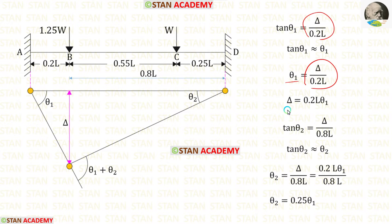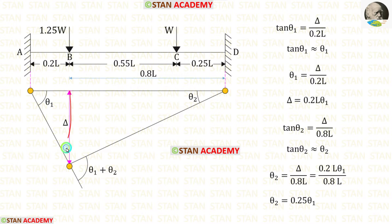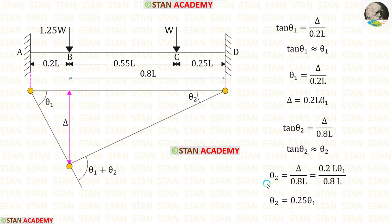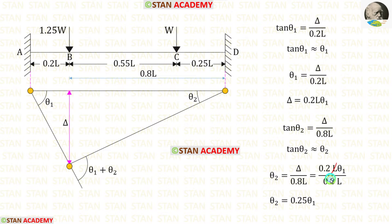From that, we get delta equals 0.2L theta 1. Now, using the other triangle, tan theta 2 equals delta upon 0.8L, and since theta 2 is small, theta 2 equals delta upon 0.8L. We can eliminate L, and finally for theta 2 we are getting 0.25 theta 1.